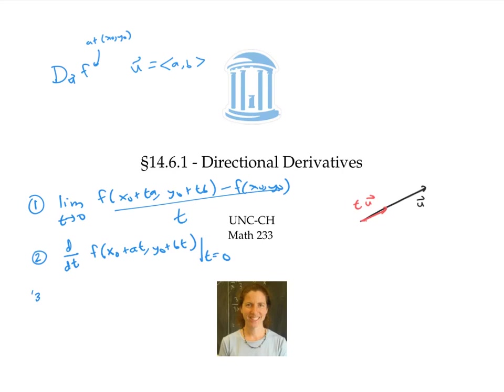And the third definition of directional derivative — which is the simplest and most useful — is f_x times a plus f_y times b. Here, a and b are the components of the unit vector, and f_x and f_y are evaluated at (x₀, y₀).